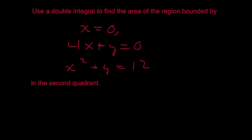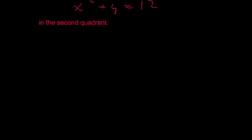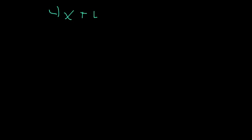So our first step is to rewrite these equations that were given in terms of x. For our first equation, we have that 4x plus y equals 0. So I'm going to move this 4x to the other side and you'll get y is equal to negative 4x. So I'll call that equation 1.